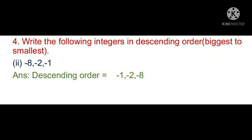Next, write the following integers in descending order — that means arranging from biggest to smallest. I will explain the second question: −8, −2, −1. All are negative numbers. Observe which is on the right side and which is on the left side. −1 is the biggest, then −2, then −8. So the descending order is: −1, −2, −8. This is descending — biggest to smallest — because −1 is rightmost, then −2, then −8. Remaining problems are homework.